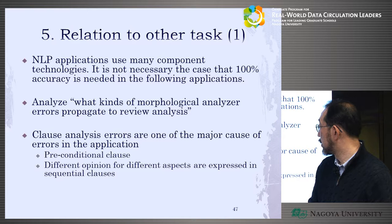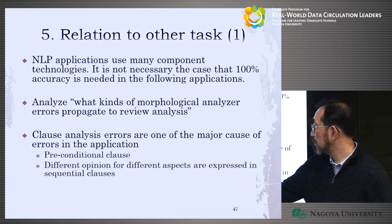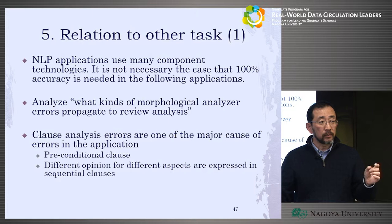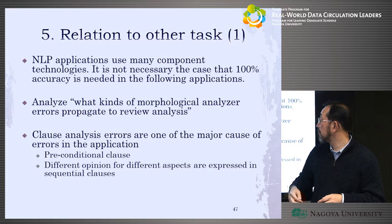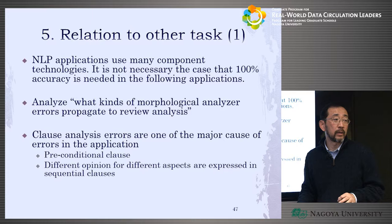For example, in a sentence like 'the onsen is good, but the service is bad,' sometimes the system analyzes 'bad' for both aspects. That changes the sentiment of the review. This kind of thing has to be accurately analyzed, and that's difficult for machines when sentences are complicated.